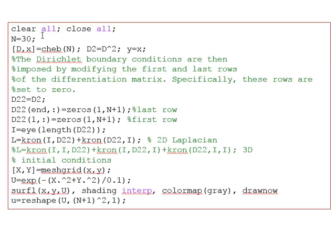We begin writing the code: clear all variables, close all figure windows. We take N = 30 points and calculate the differentiation matrix using the cheb command, passing only N to get both the differentiation matrix D and the collocation points x. For the second-order derivative we compute D2 = D². We set y = x, and note that Dirichlet boundary conditions are placed in the first and last rows of the differentiation matrix.